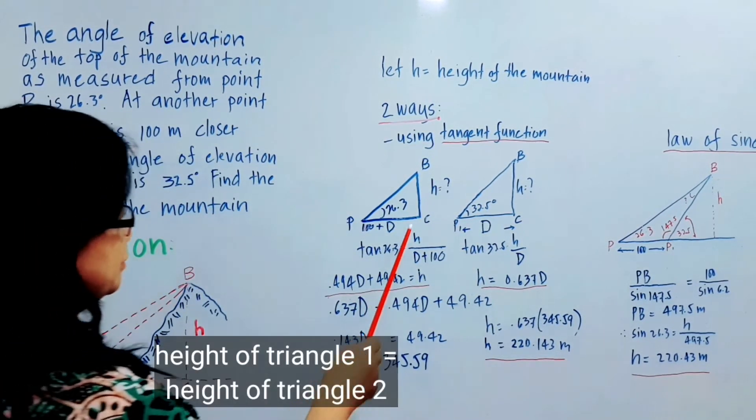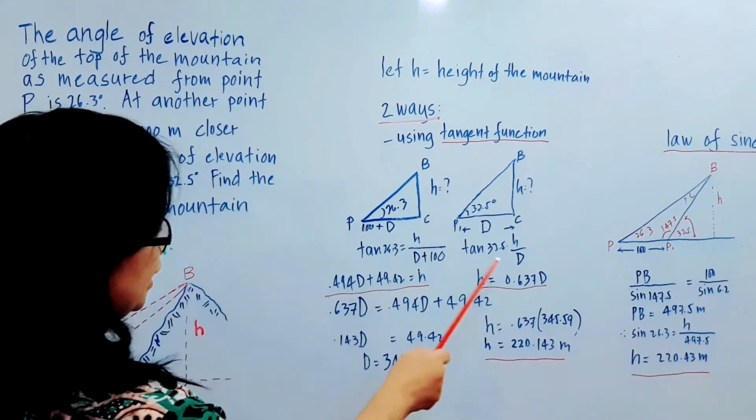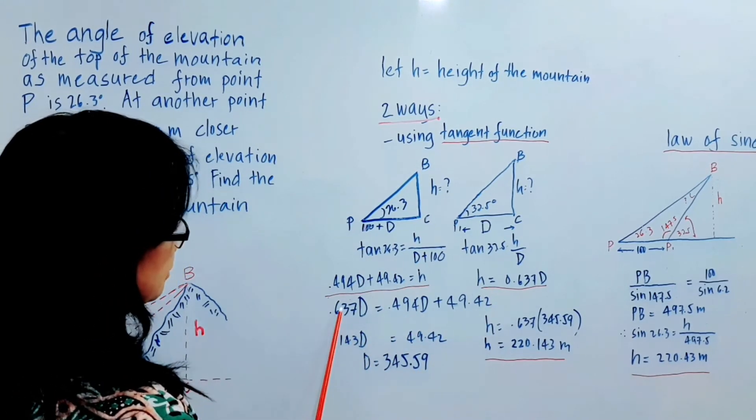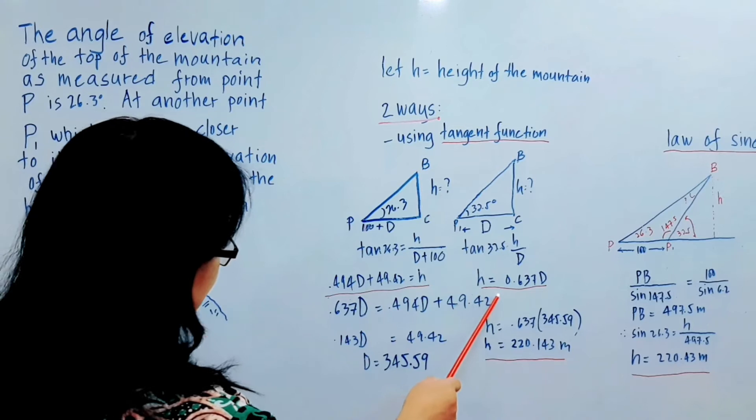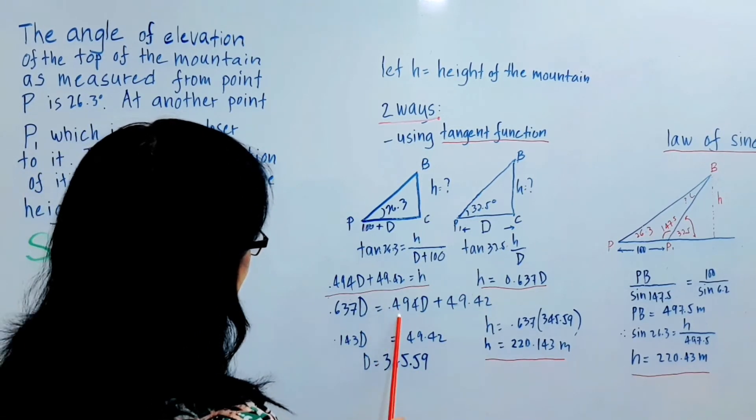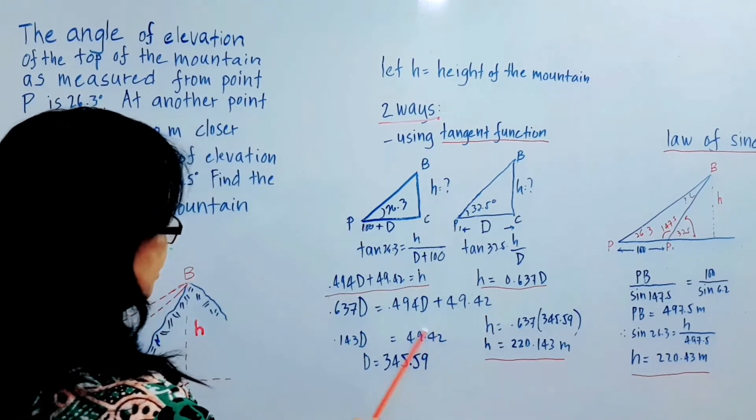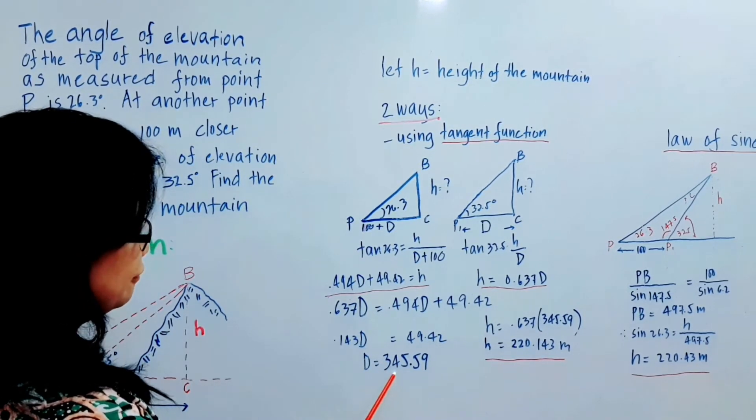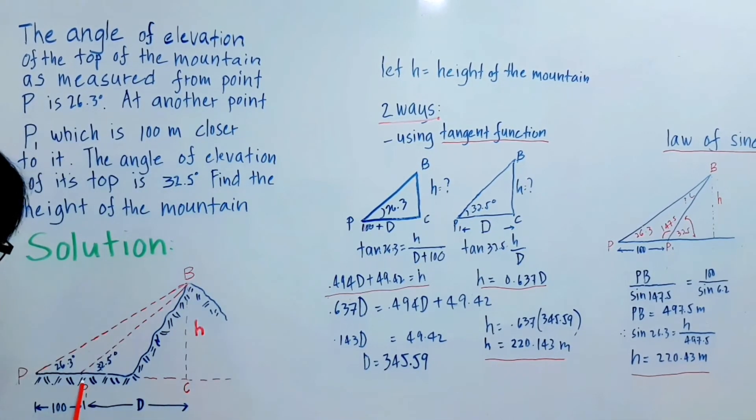Now of course, they have the same height, so we can substitute the value of H into this equation. H equals 0.637D equals 0.494D plus 49.42. Therefore, D is equal to 345.5 meters. That's the distance from P1 to C.